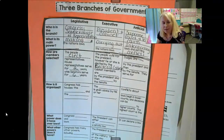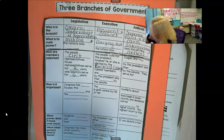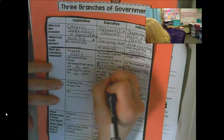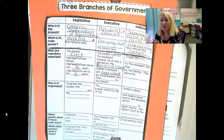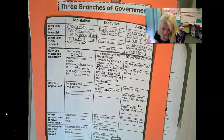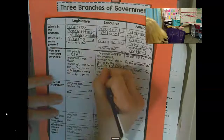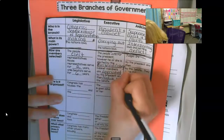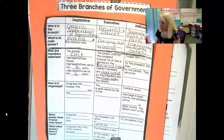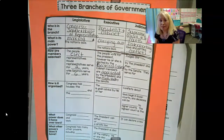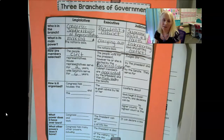The cabinet — the advisors who help the president make his decisions — are appointed. That means suggested by the president; he picks them. However, they have to be approved by the Senate. The Senate confirms them. So again, that's that check on power — yes, he or she picks their advisors, but the Senate has to agree with those decisions.